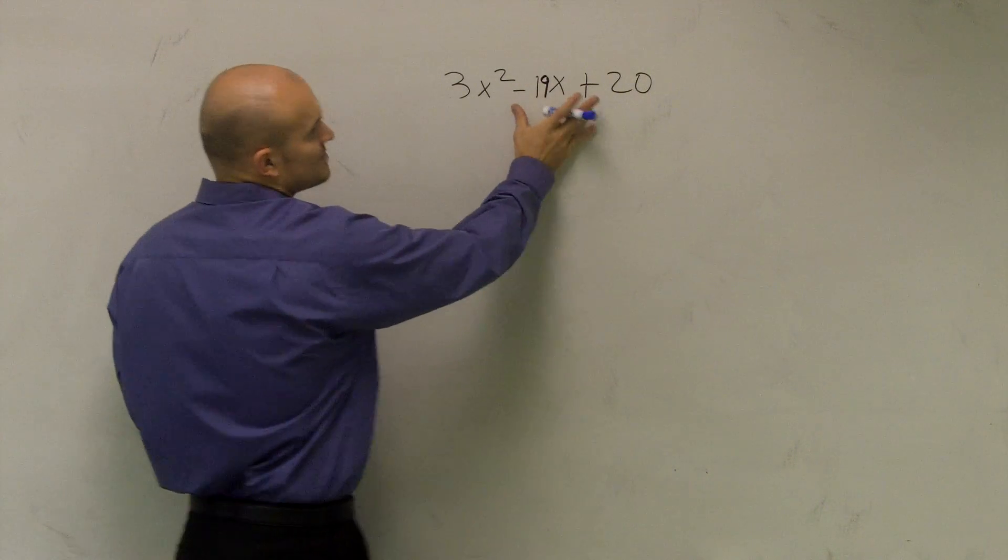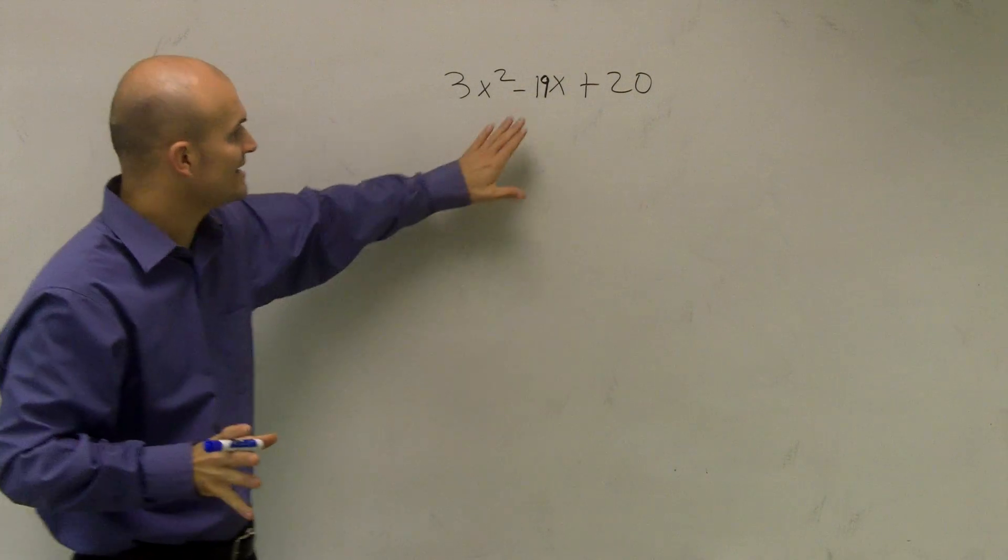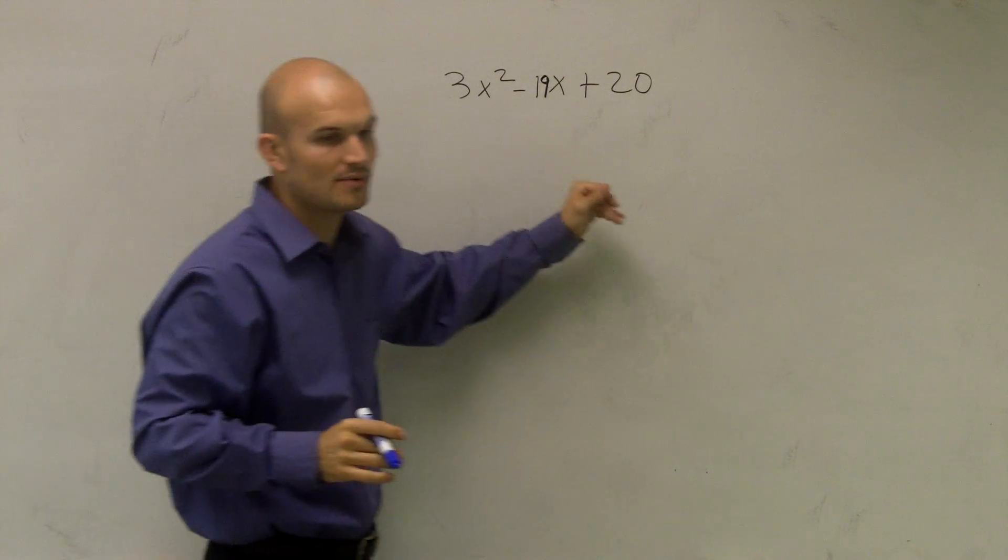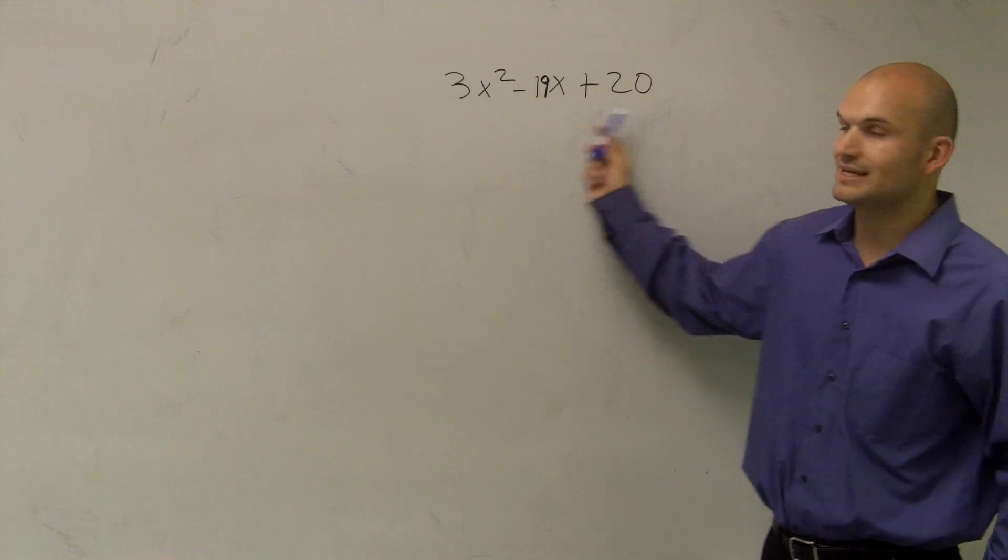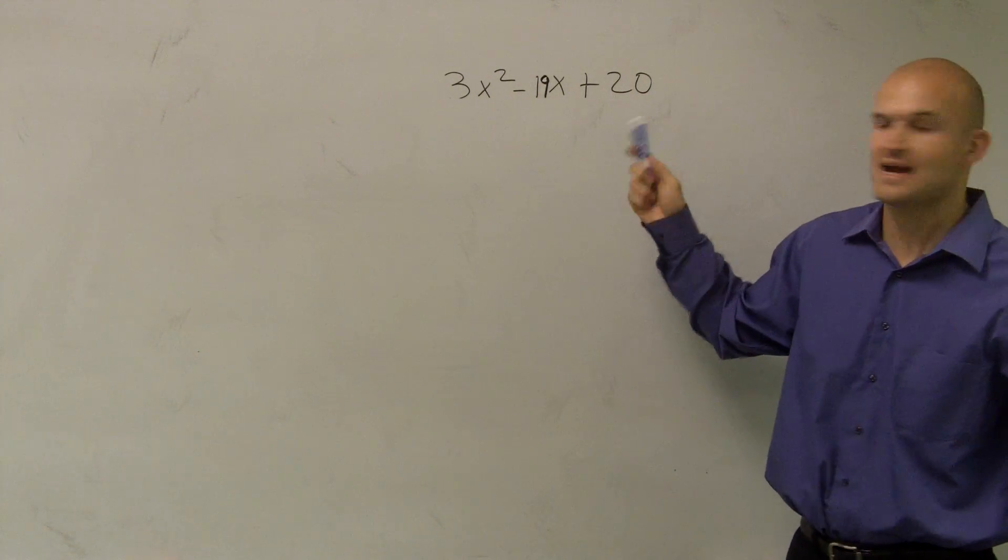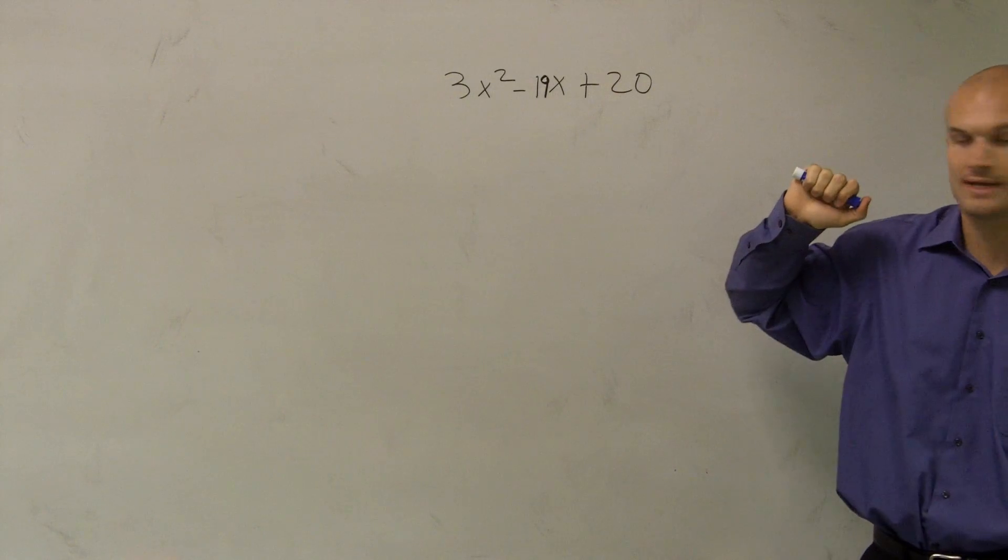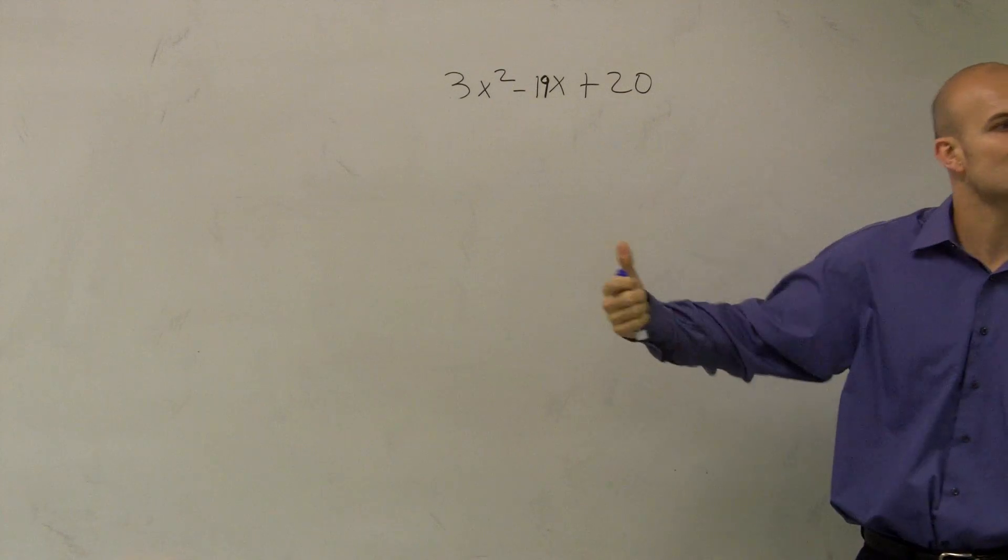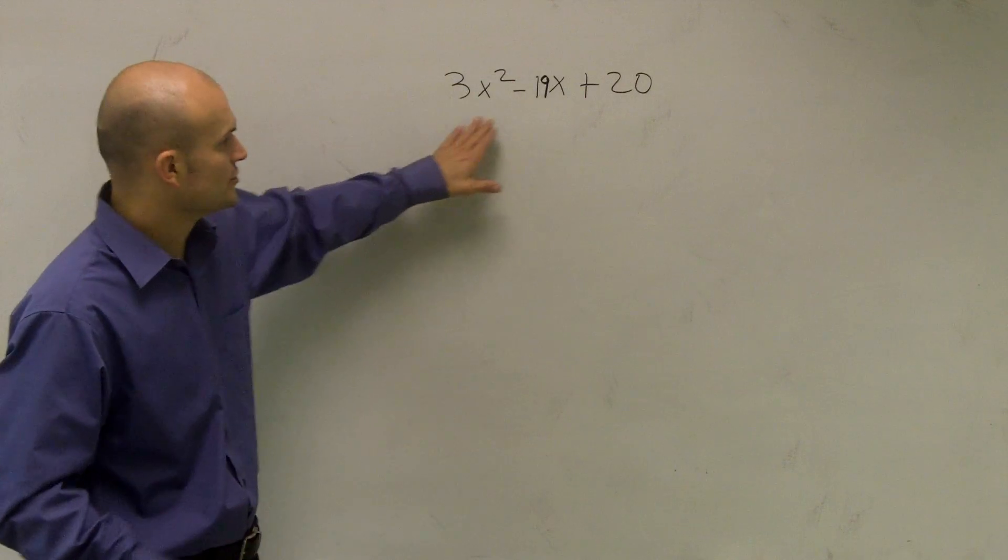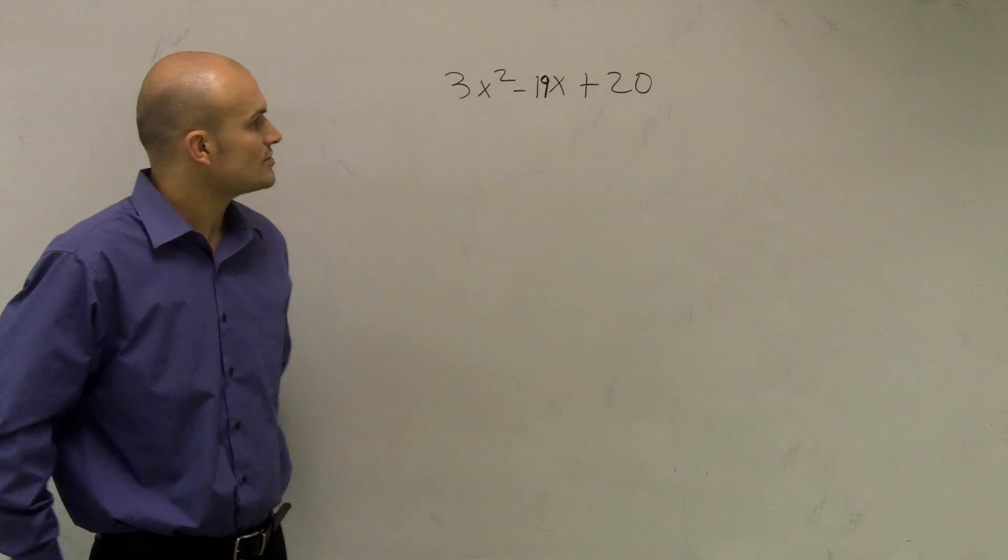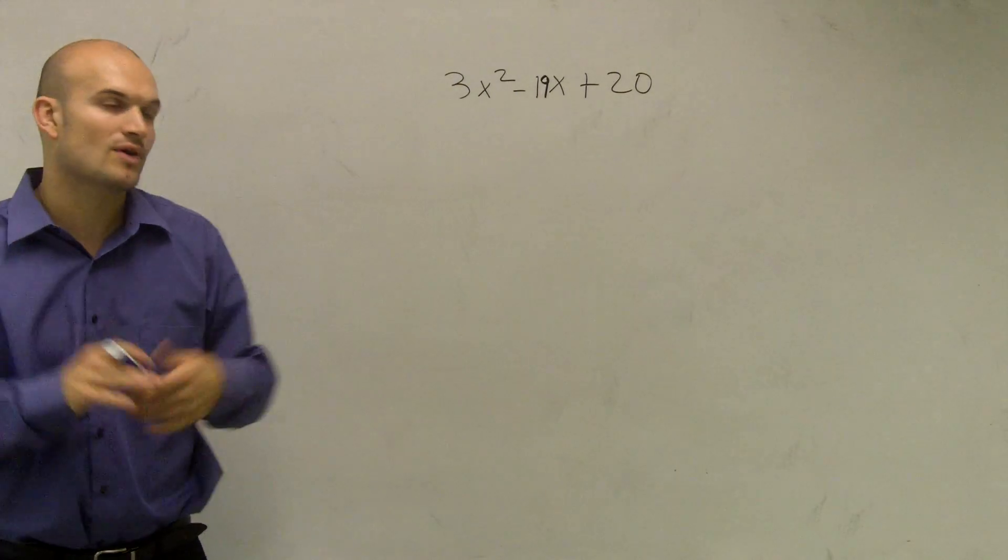So what I'm doing is I need to break this up into two expressions that divide evenly into this. Now, the first one we always want to look for is a numeric expression, like a number, that can easily divide into this. And that would be a factor. So I look at this, is there any number that can divide into 3, negative 19, and 20? And the answer is no. So therefore, now what I'm going to have to do, and there's also no variable that divides into there. So now what I'm going to have to do is simply look at a method to write this as a product.